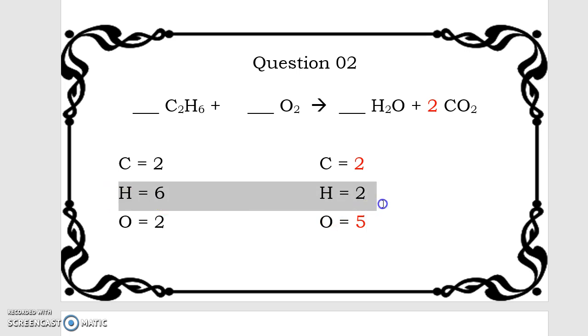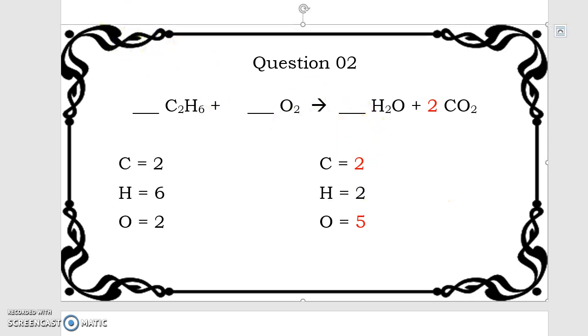Next, I'm going to check my hydrogens. So I'm going to see that I have six hydrogens on the reactant side, two hydrogens on the product side. So I'm going to say two times blank equals six. That's going to tell me that I need to change this coefficient to three.